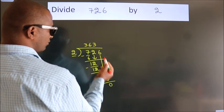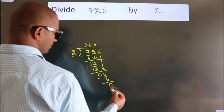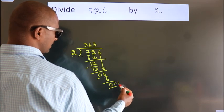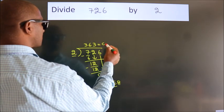After this, no more numbers to bring it down. So, we stop here. This is our remainder. This is our quotient.